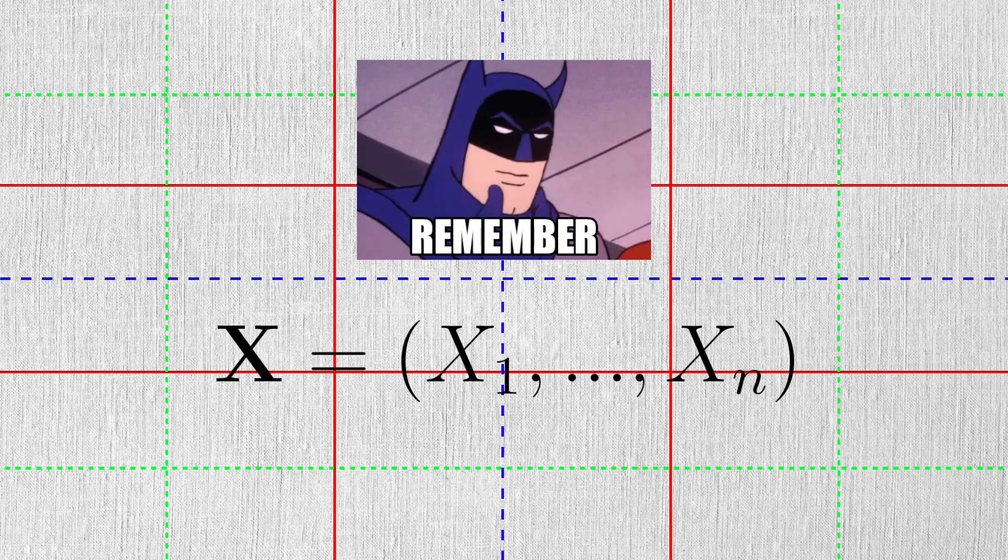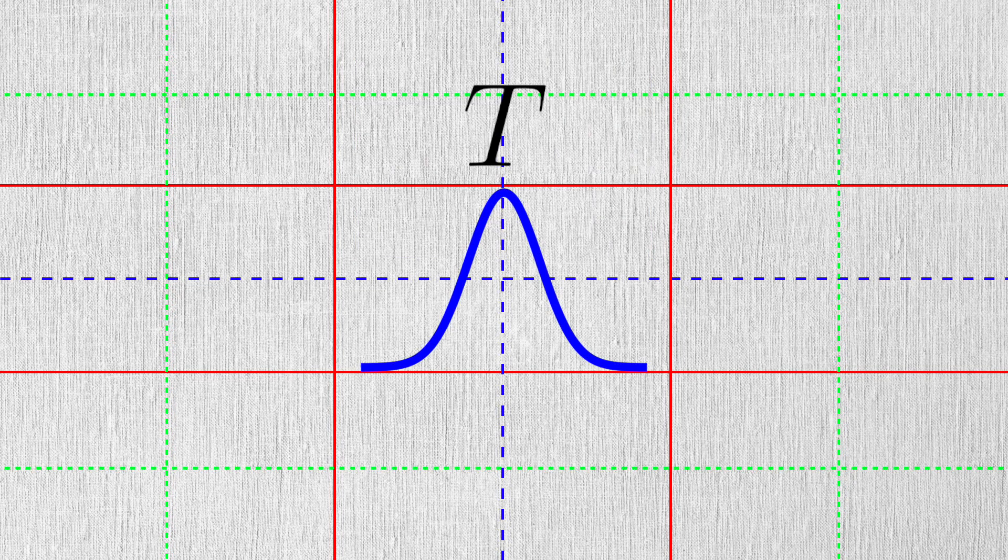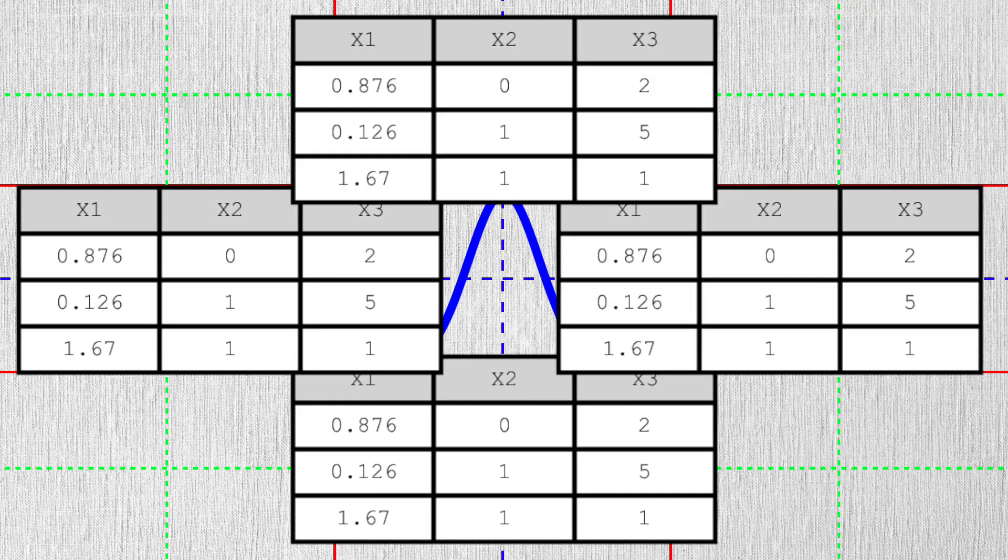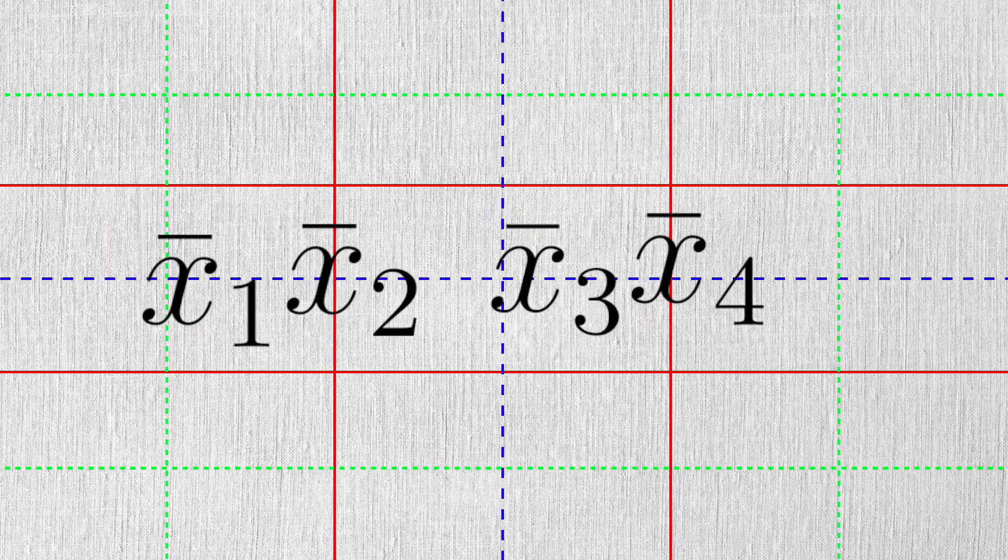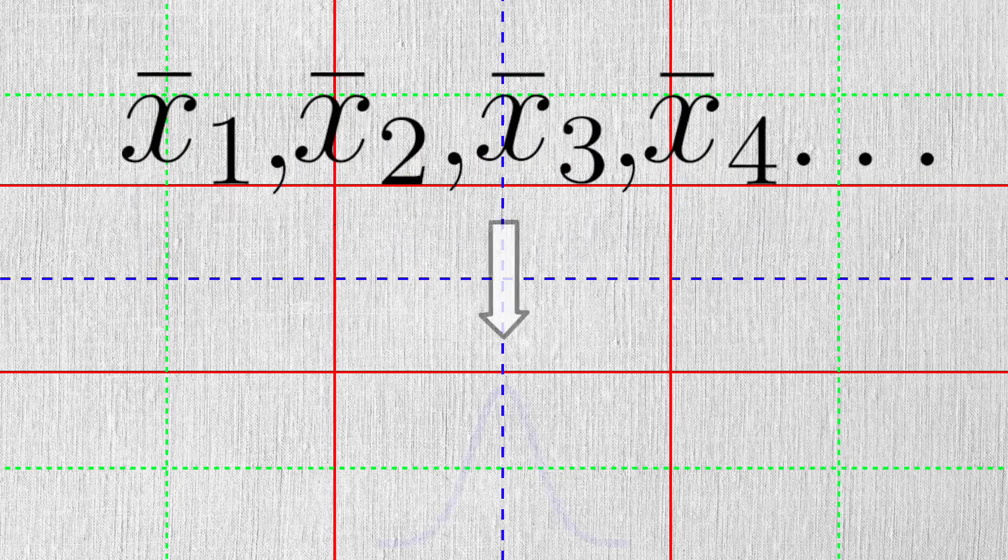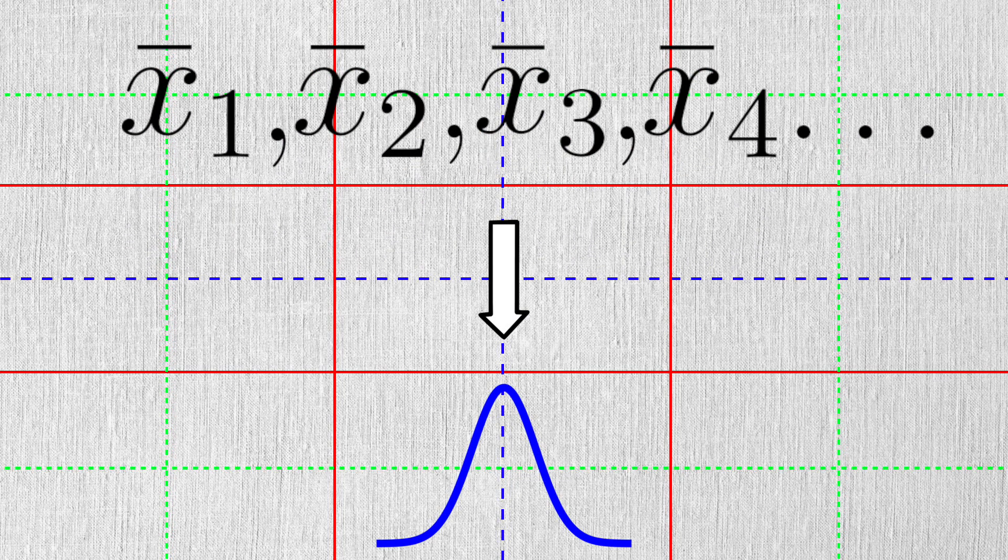Remember that we consider the data to be random as well. To get the distribution, we need to go out and collect many, many datasets. Then we calculate the statistics from each of them. From these calculated statistics, we can rebuild the PDF of the random variable or the statistic itself.